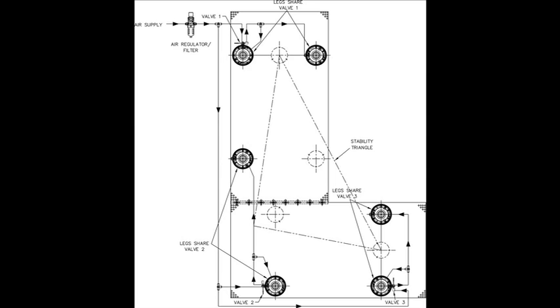The two legs at the top of the doubler are controlled by valve one. The two legs at the far right are controlled by valve three, and the remaining two legs are controlled by valve two. This design creates the largest stability triangle possible.